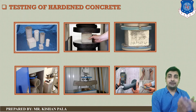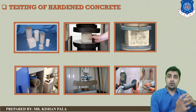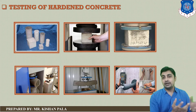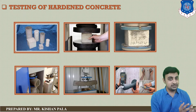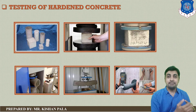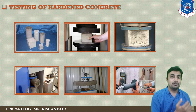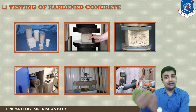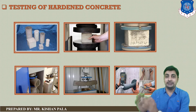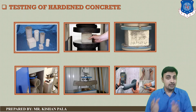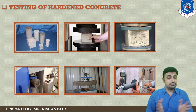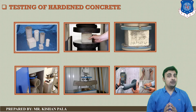You can identify the hardened property by crushing the concrete mass or applying a load to the concrete mass, and after that you can identify the strength of the concrete mass. We have been using this method for a great number of years. For the non-destructive test, we can identify the hardened properties of the concrete without damaging the concrete mass. You can see these pictures showing different types of specimens used for finding the hardened properties.